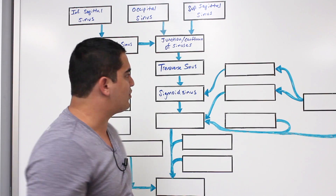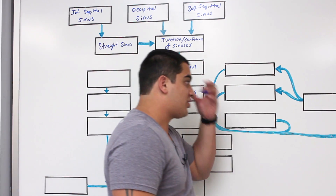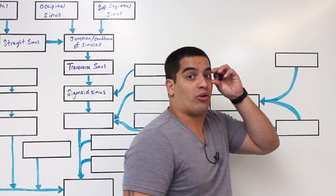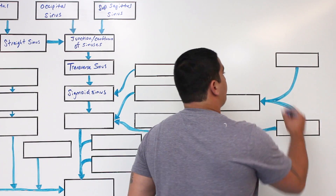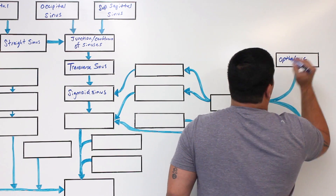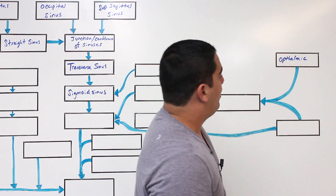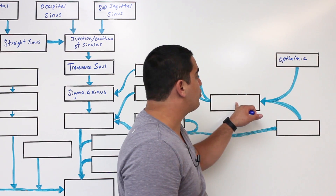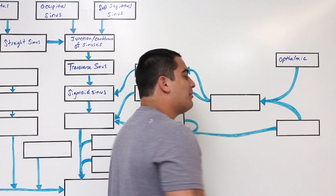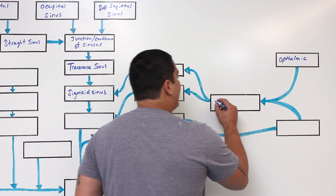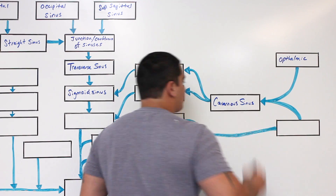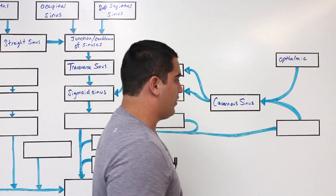Now let's talk about some other sinuses. There's another vein within the orbital cavity called the ophthalmic vein. The ophthalmic vein, which is in the orbital cavity, can drain into a special structure located more posteriorly near the sphenoid bone — called the cavernous sinus. So the ophthalmic vein can empty into the cavernous sinus.